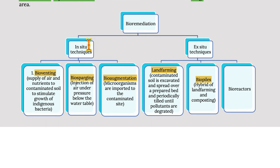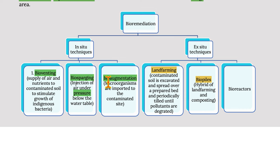Bioremediation can use in-situ or ex-situ techniques. In-situ techniques include bioventing — the supply of air and nutrients to contaminated soils to stimulate growth of indigenous bacteria; biosparging — injection of air under pressure below the water table; and bioaugmentation — importing microorganisms to the contaminated site.